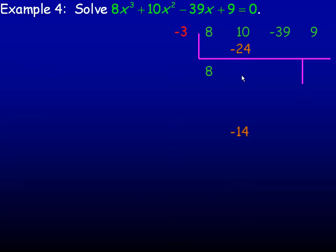Added to the 10 is negative 14. Negative 14 times negative 3 is 42. Added to the negative 39 is positive 3. And 3 times negative 3 is negative 9, giving us a remainder of 0 when we add the 9 and negative 9.